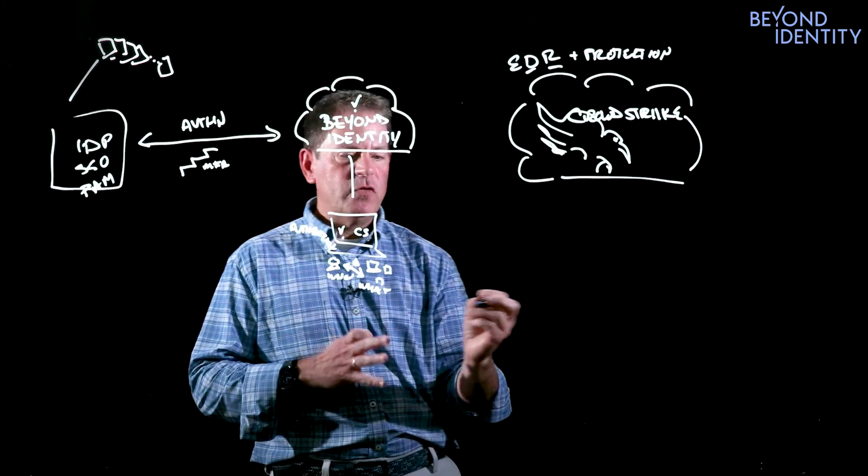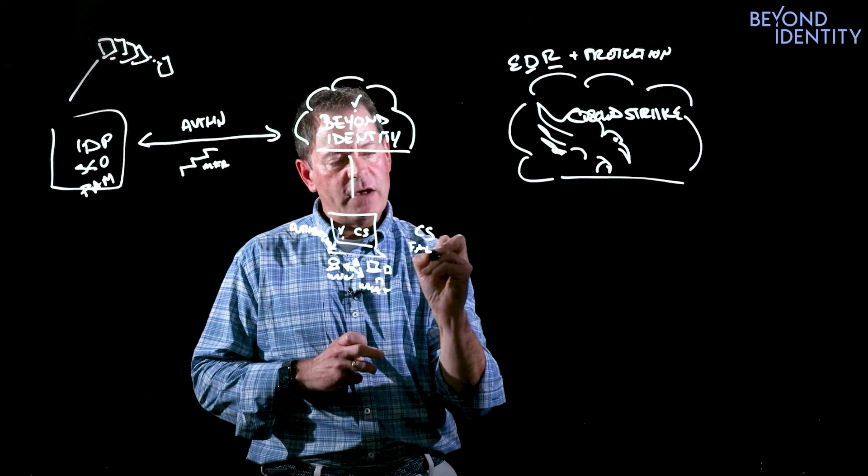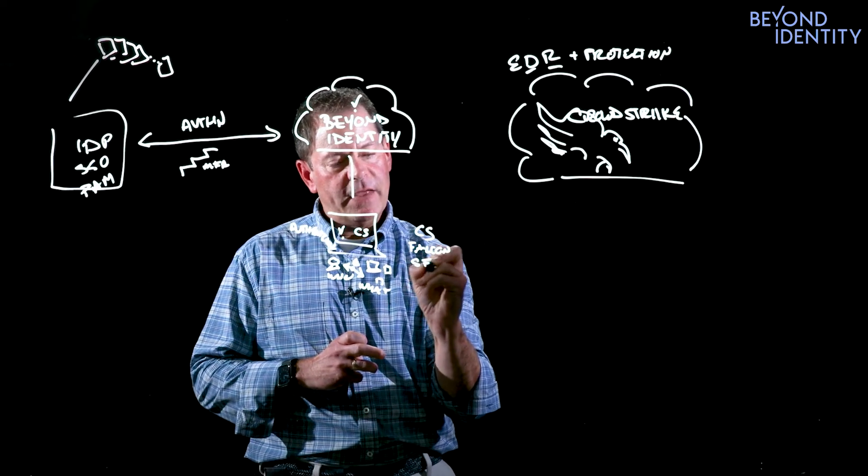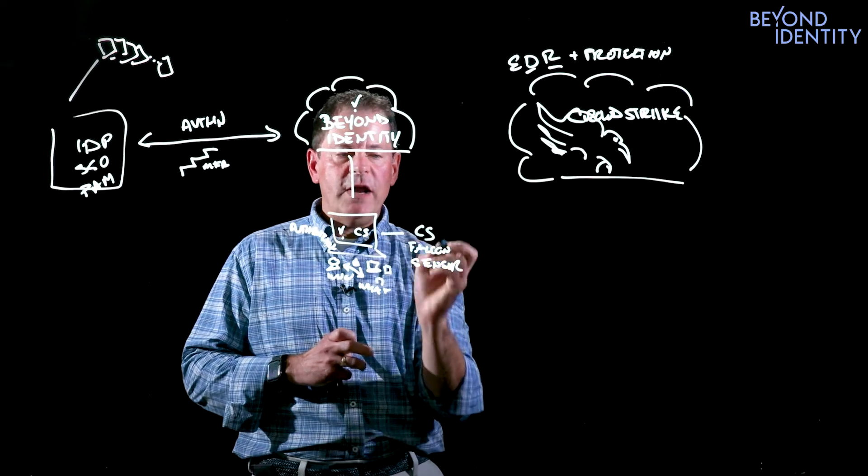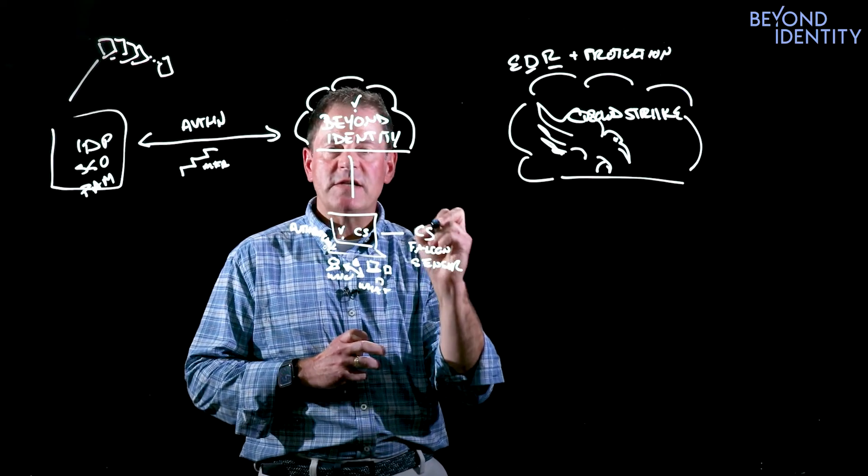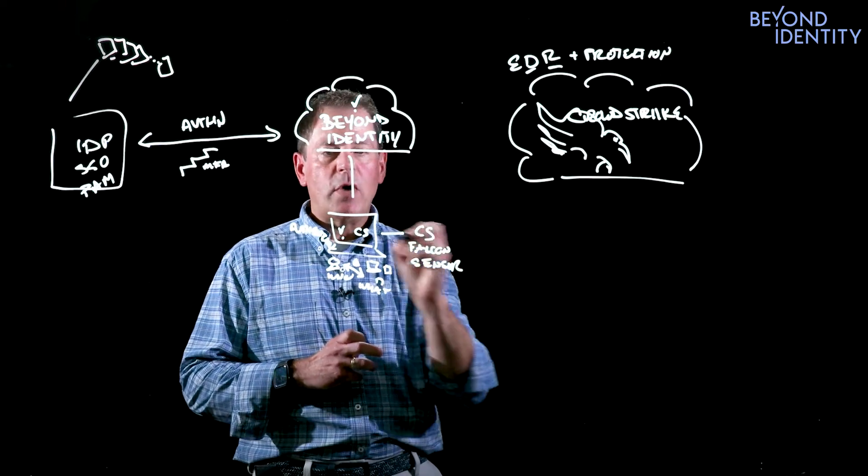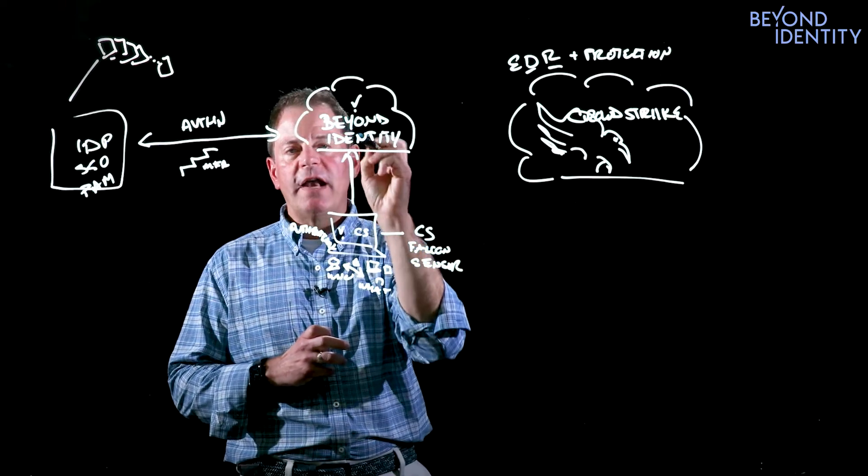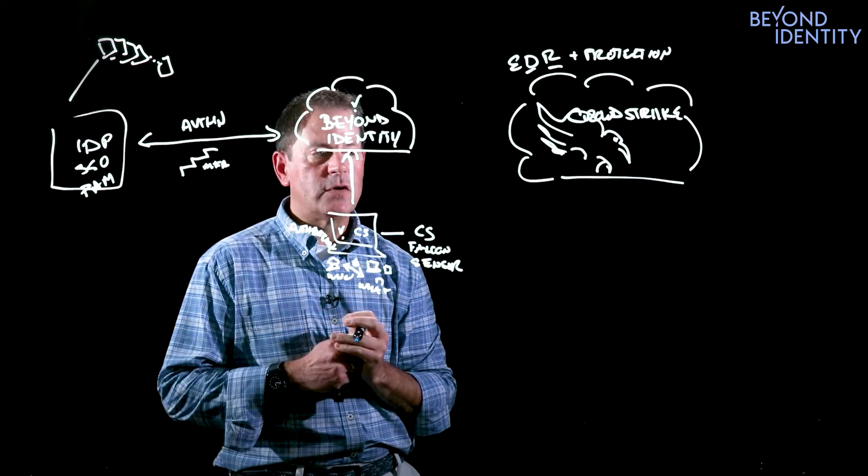First and foremost, we're looking for the presence of the CrowdStrike Falcon sensor on that device. When that user authenticates, we validate that that sensor is on that device, that it's configured appropriately prior to providing access to the various resources that the end user is trying to access.